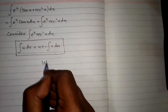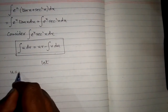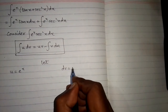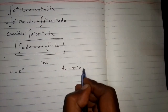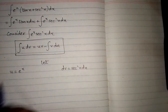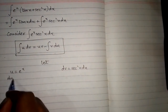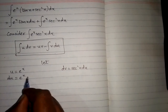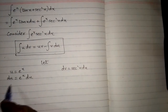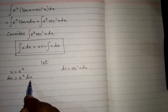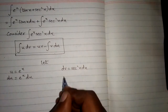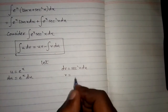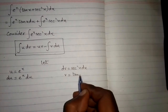We let u equal e to the power x and dv equal sec squared x dx. Then the differential du is equal to the derivative of e to the power x, which is again e to the power x dx. Integrating both sides, v equals the integral of sec squared x, which is tan x.